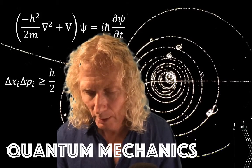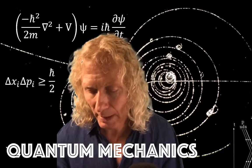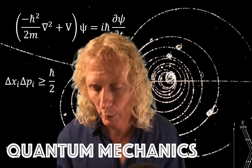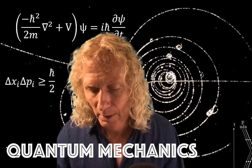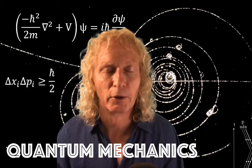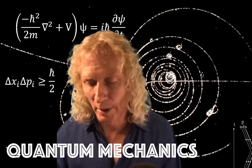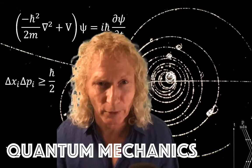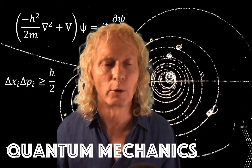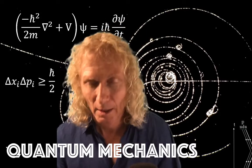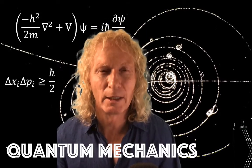So remember that the expected value for the position of a particle in the square well was given by this expression here. We used the word average position. Now I'm changing the terminology to expectation value, or expected value, which is pretty typical.